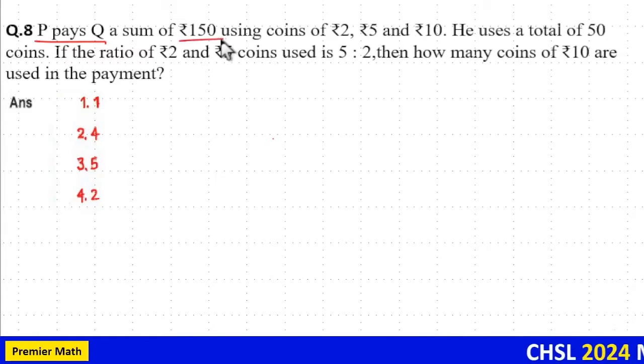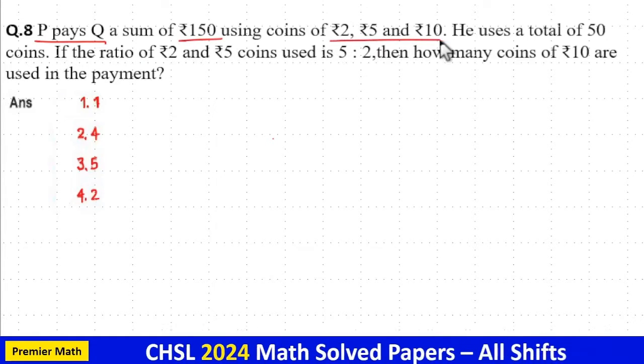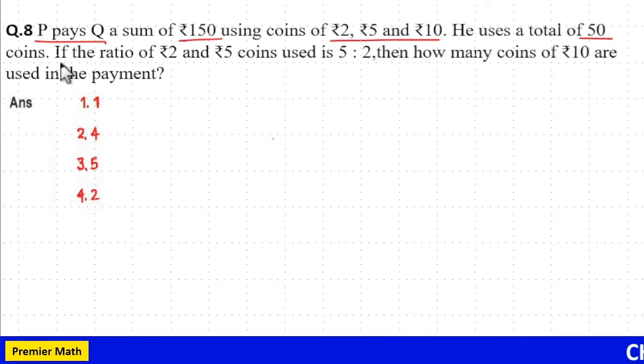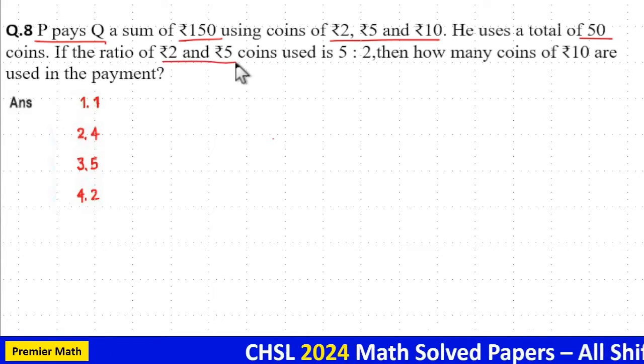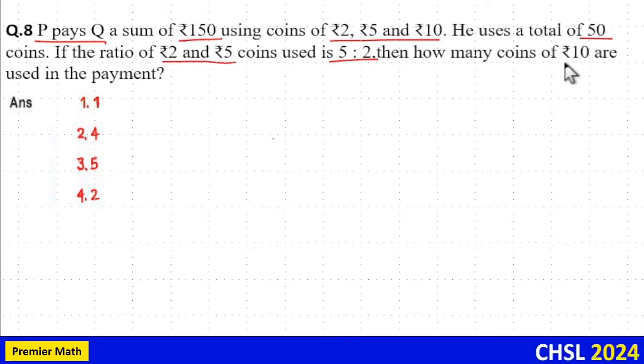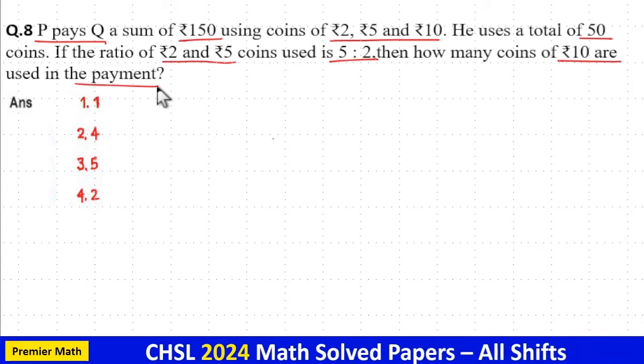P pays Q a sum of rupees 150 using coins of 2, 5 and 10. He uses a total of 50 coins. If the ratio of 2 rupees and 5 rupee coins used is 5 is to 2, then how many coins of 10 rupee are used in the payment?